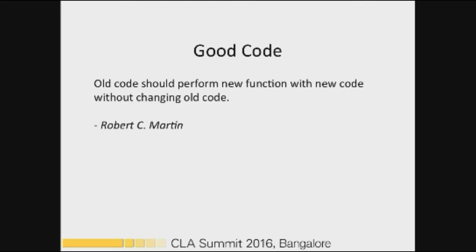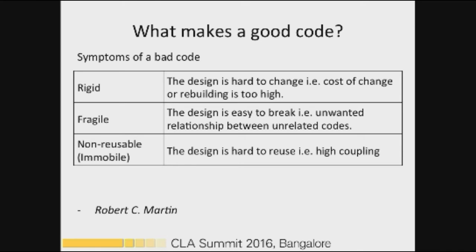Before we understand good code, let's discuss what bad code is. Bad code has properties like rigidity, fragility, and non-reusability — these are the most prominent ones. Rigidity means the design is very difficult to change. Fragility means that making a small change causes it to propagate and break unrelated parts of the code. Non-reusability means it is very difficult to reuse because it has too many dependencies.